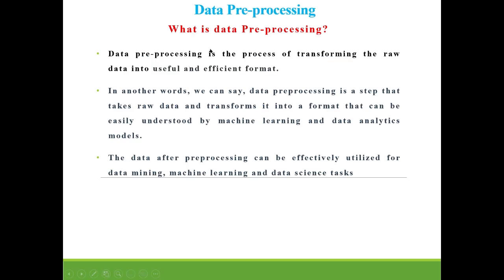Data pre-processing is the process of transforming raw data into a useful and efficient format. Generally raw data is not in the proper format, so we need to transform it into a format that can be utilized for machine learning and data analytics models. In simple words, data pre-processing is a step that takes raw data and transforms it into a format that can be easily understood by machine learning and data analytics models, and can be effectively utilized for data mining, machine learning, and data science tasks.